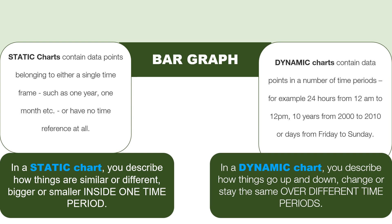In the last video, I showed you the difference between the dynamic bar chart and the static bar chart. I'm going to revise it again before going into the details about the static bar chart. The static bar chart contains data points belonging to a single time frame — it will be for one year, one month, or you will not find any time reference at all in the graph. Whereas the dynamic graph is very much similar to the line graph and it covers a period of time from one point to another.